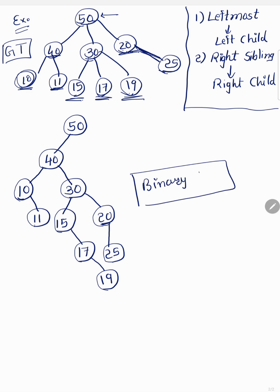This is your final binary tree. As you can see, node 50 has one child, 40 has two children, 10 has one child, 30 has two children, 15 has one child, 17 has one child, and 20 has one child. At most two children — it never exceeds two. If a node had three or four children it would be a general tree, not a binary tree.